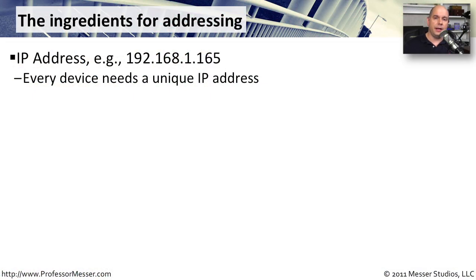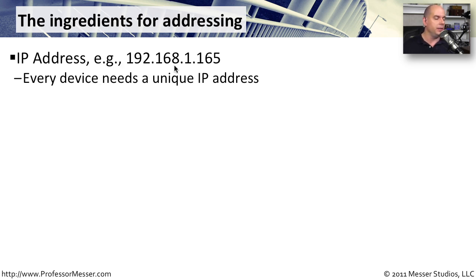If you want to be able to communicate out to the internet, there are a few things you must configure on your workstation. The first, obviously, is an IP address. We need to put an IP address configuration that's specific to the subnet that we happen to be physically connected to. For example, we might be given an IP version 4 address of 192.168.1.165. This IP address must not be shared with anybody else on the network — it is unique to our workstation.